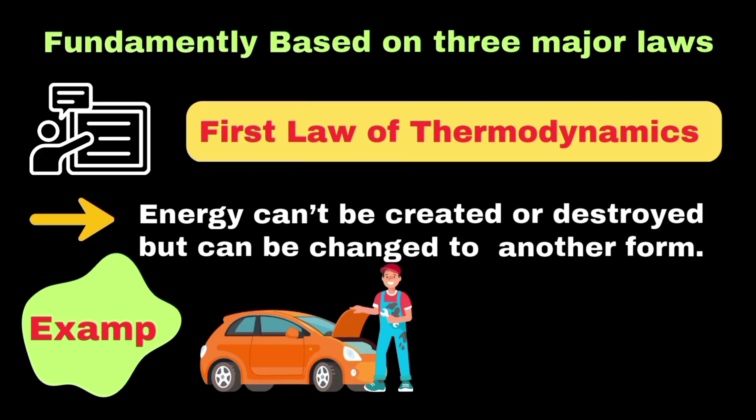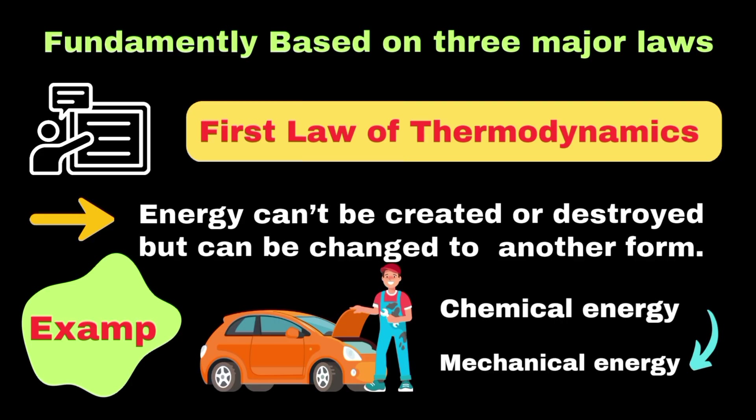To understand this, let's take the example of a car engine. When gasoline burns in the engine, its chemical energy is converted into mechanical energy to move the car and heat energy that makes the engine warm. If we could measure all these energy forms precisely, we would find that the total energy remains constant.